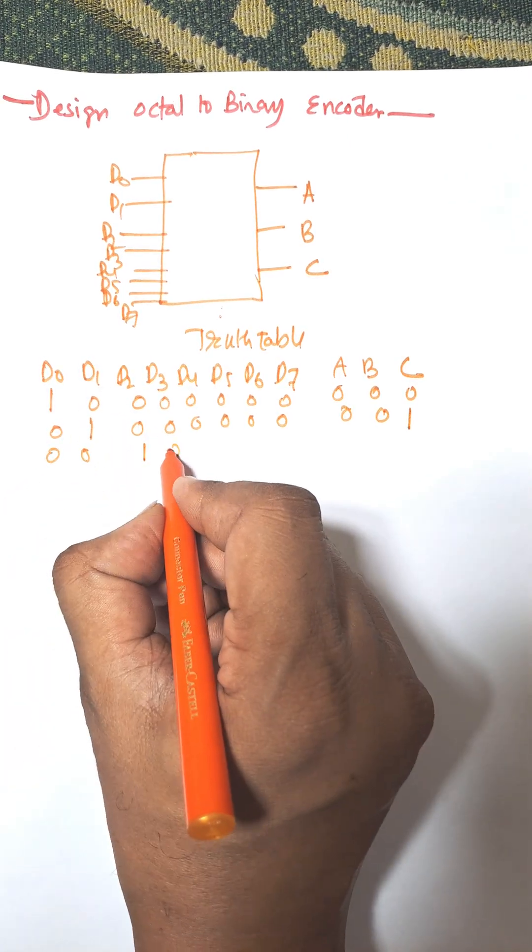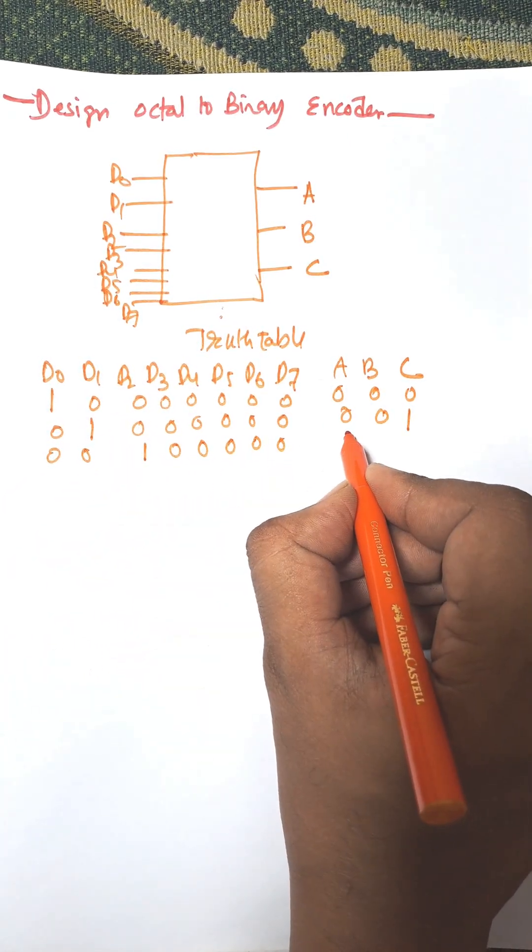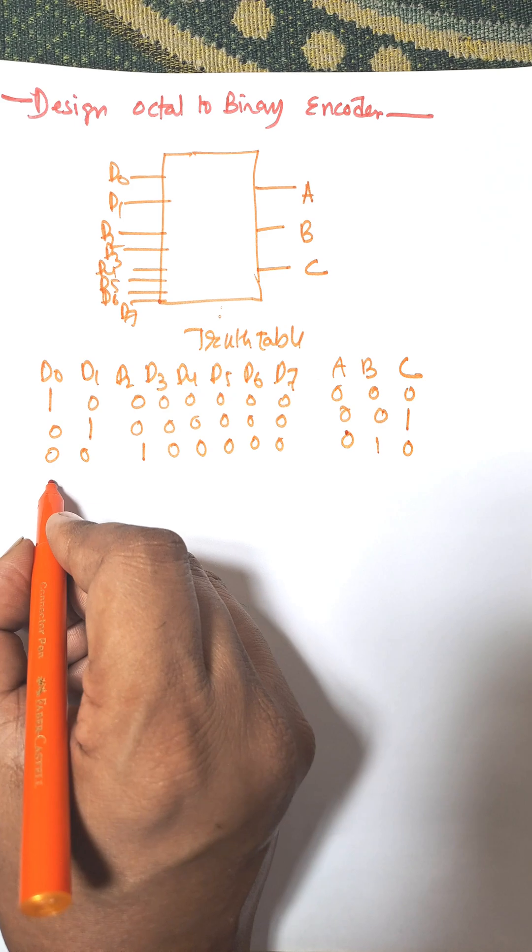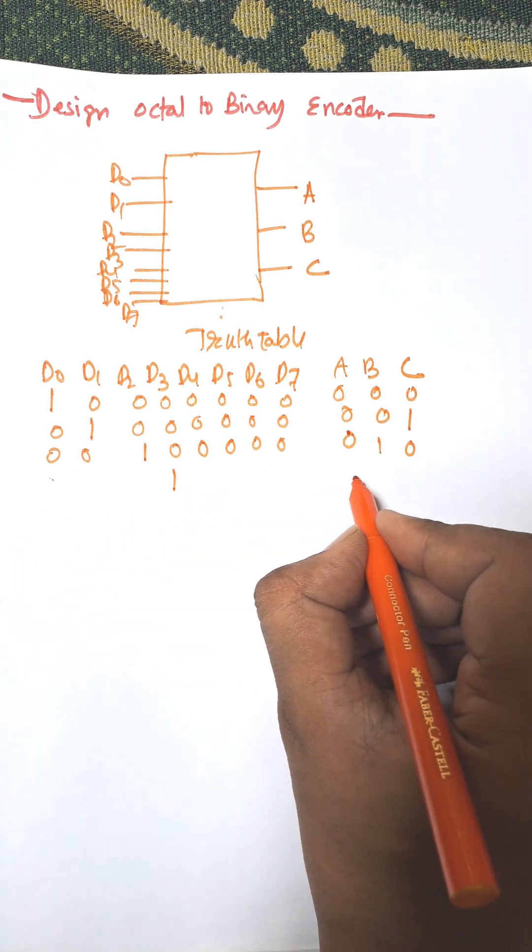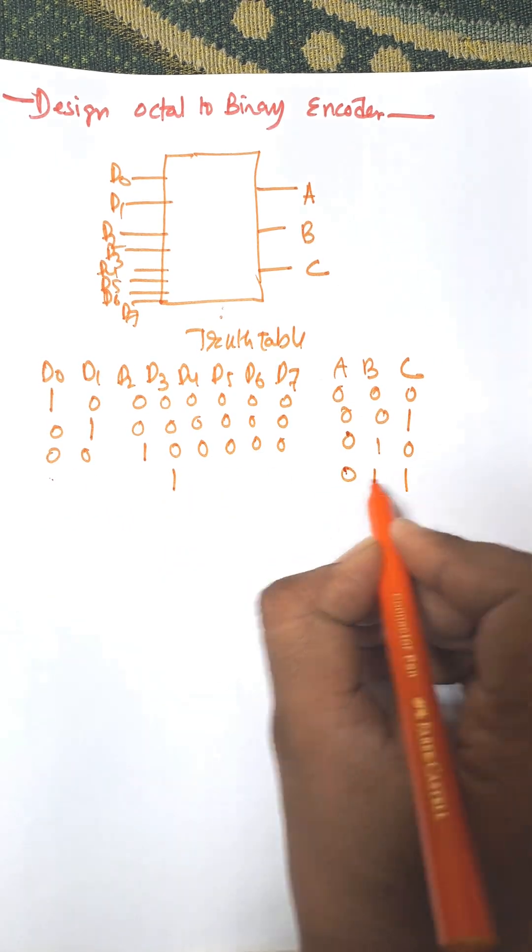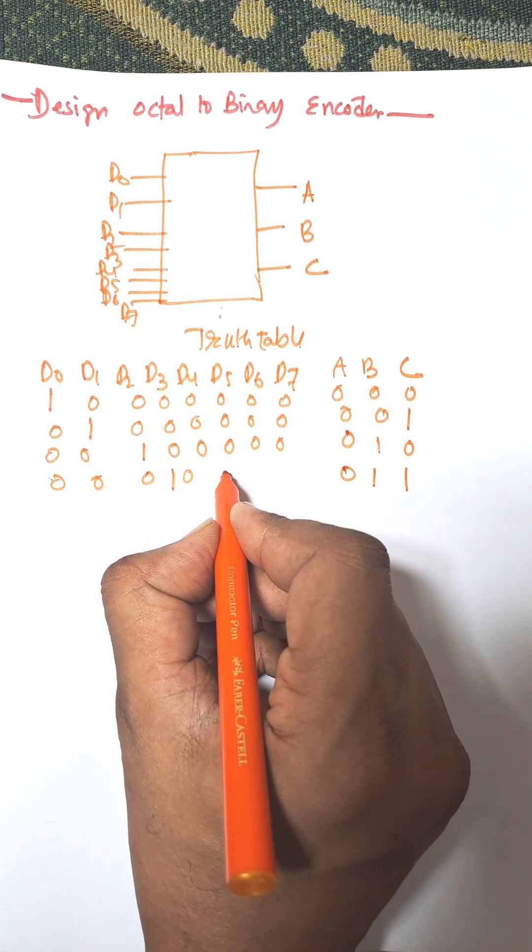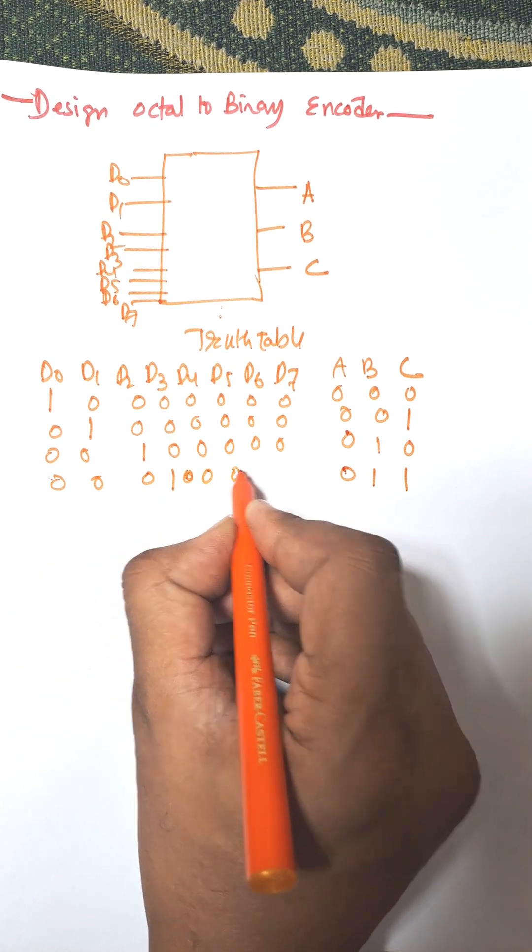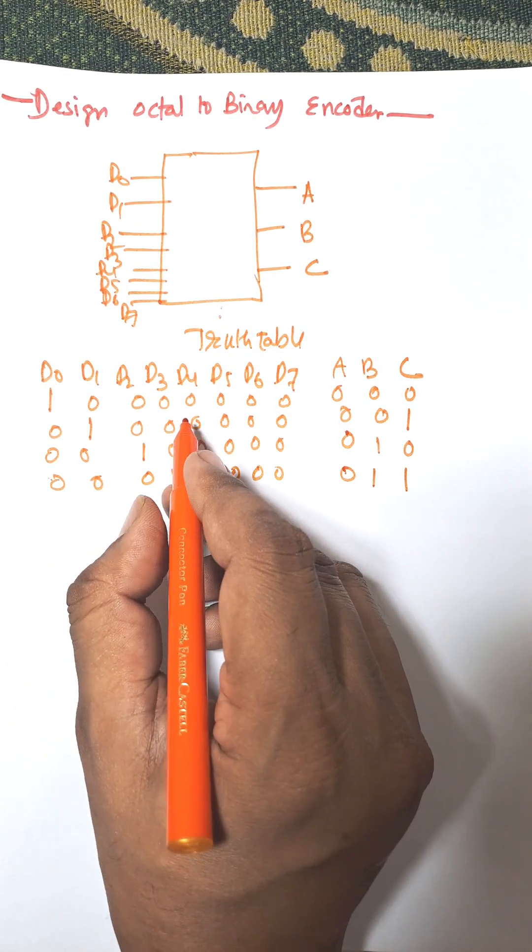When we press d2, the equivalent binary is 0, 1, 0. And when we press d3, equivalent binary is 0, 1, 1. Remaining all are 0.